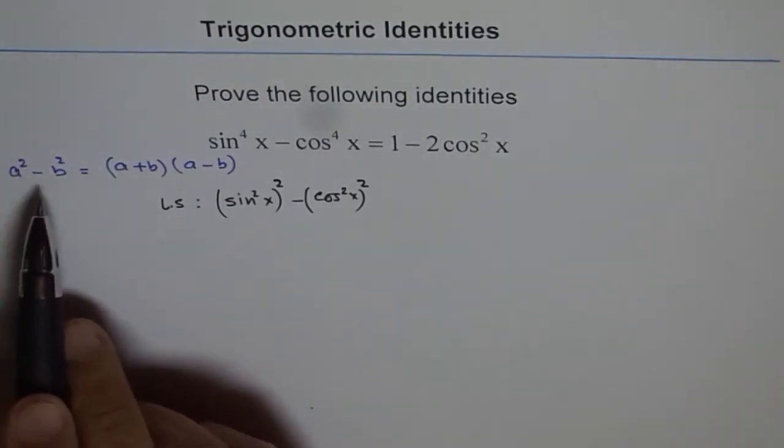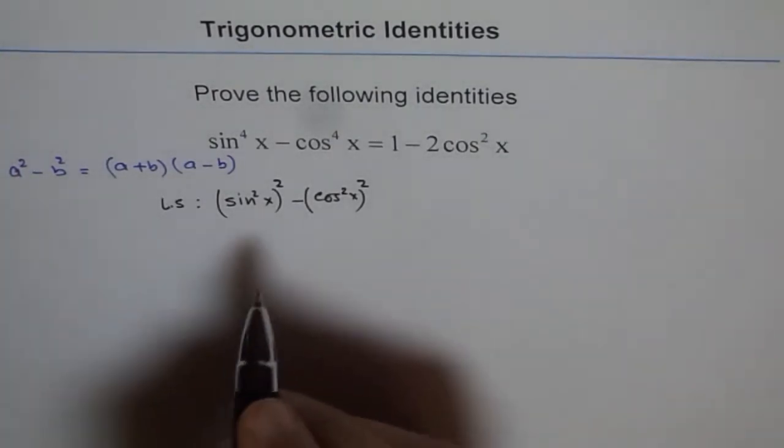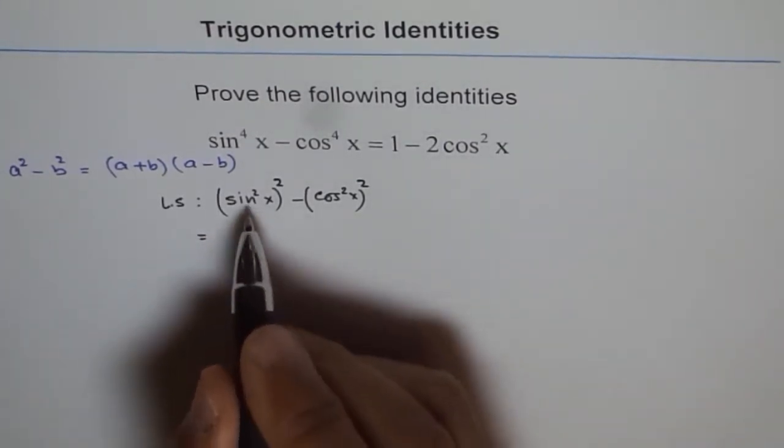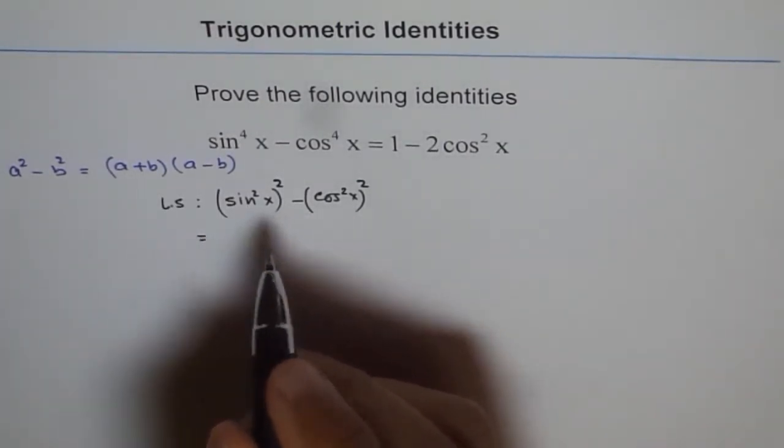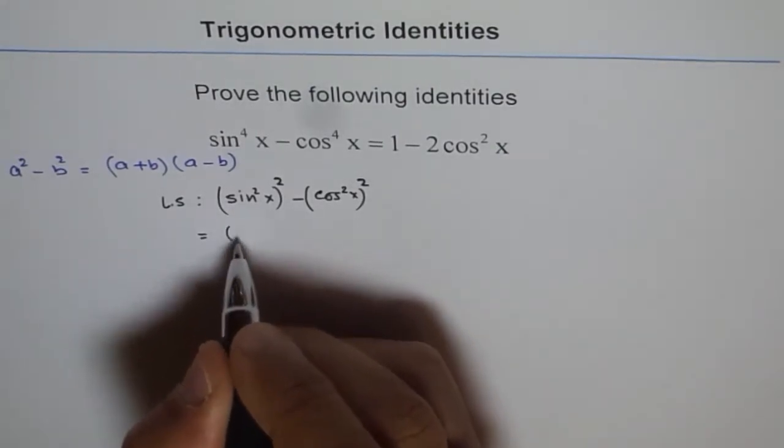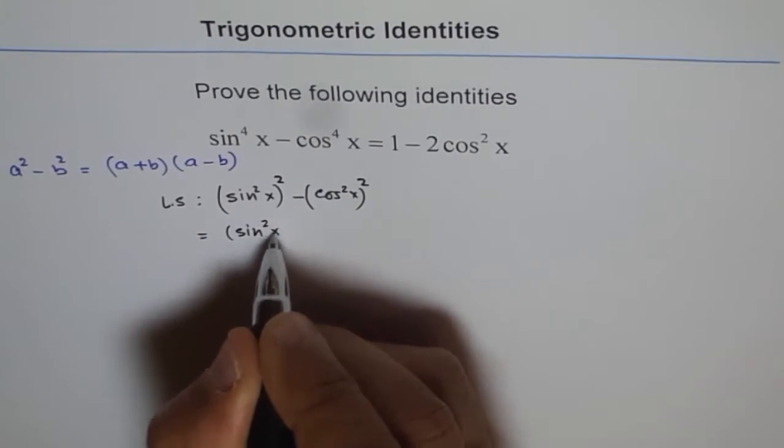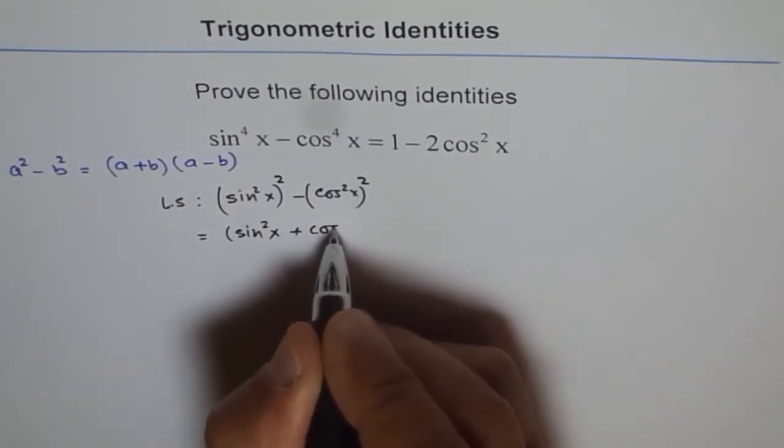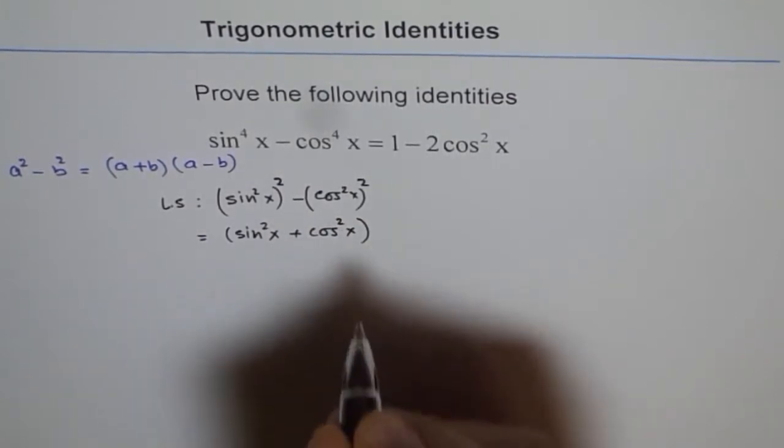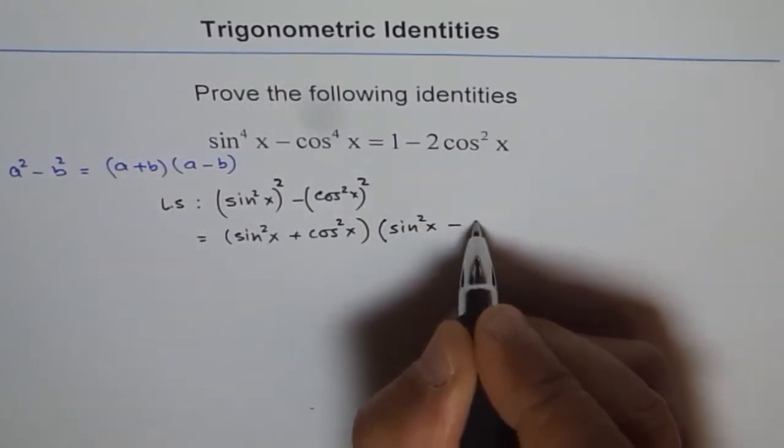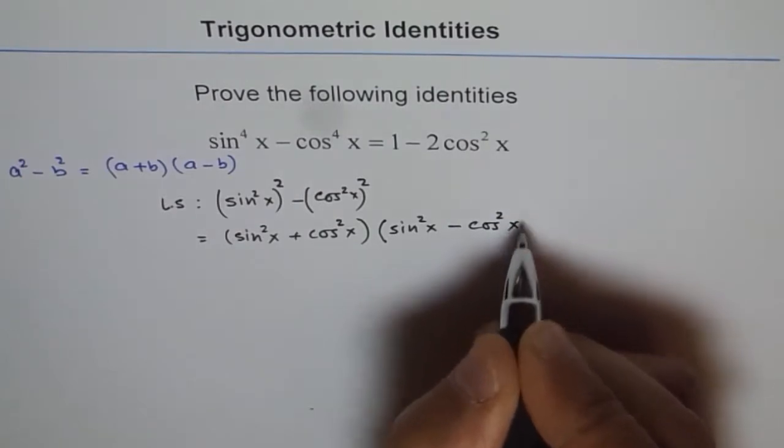Now I will use a^2 - b^2 = (a+b)(a-b). Basically I will factor this. So if I do that, I get (sin^2x + cos^2x)(sin^2x - cos^2x).